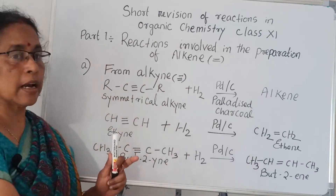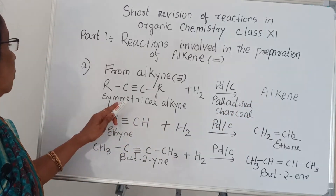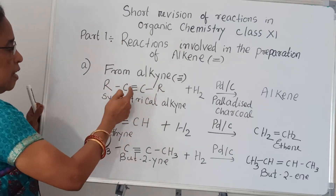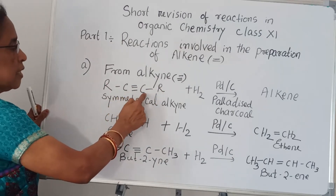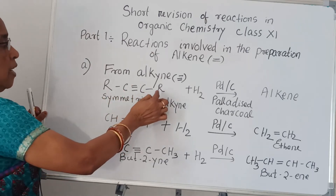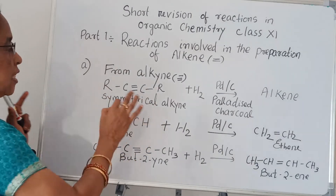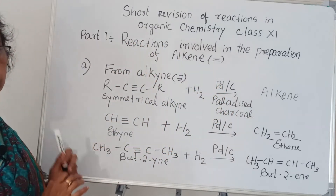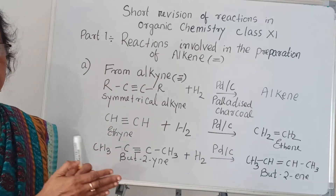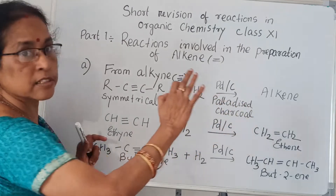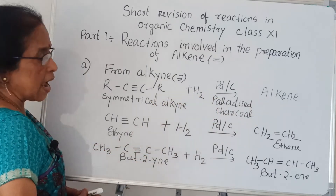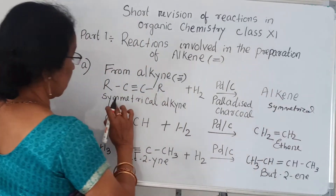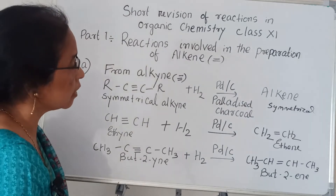From symmetrical alkyne, how can you get alkene? You take a symmetrical alkyne — on this side R and on this side R, with the triple bond in the middle. That means R is one alkyl group, the same on both sides. With hydrogen in the presence of palladium and charcoal, you will get a symmetrical alkene. So the answer is symmetrical alkene.